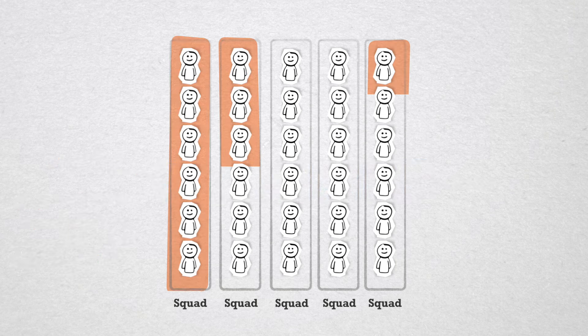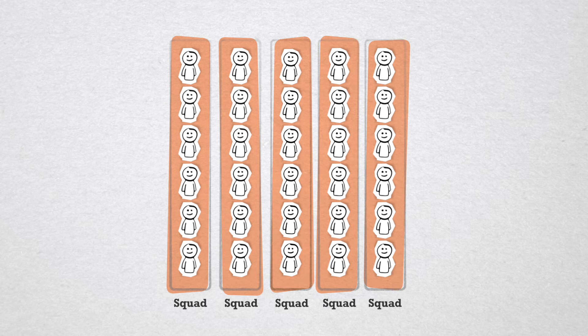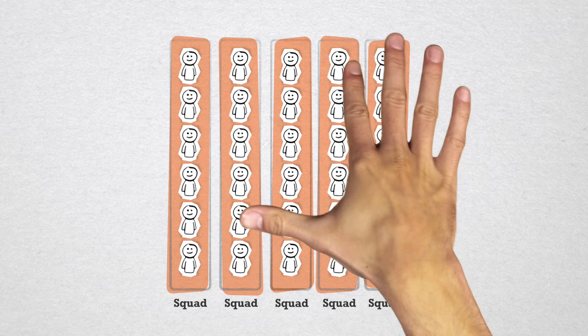But if squads are self-steering and autonomous, how can we ensure coordination between squads? That is where tribes come in.